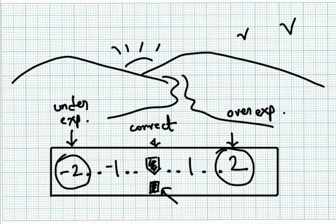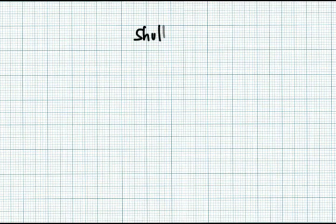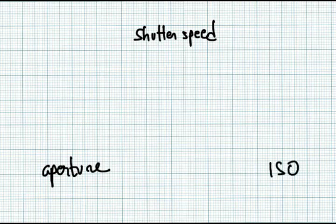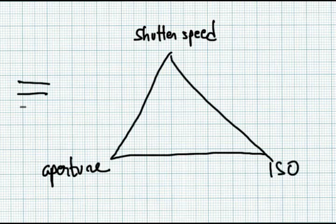Normally cameras can show up to two stops under exposed or two stops over exposed settings. For proper exposure, the three parameters - shutter speed, aperture and ISO - must be set at a particular combination. The important thing to notice is that there are many possible combinations of these settings that will result in same exposure.